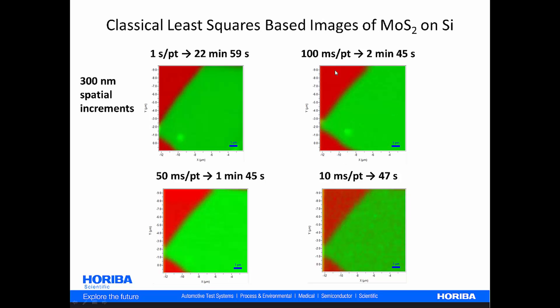Now, here are those same datasets treated to classical least squares algorithm. And you could see that if we now incorporate the entire spectrum in this CLS routine, we really don't lose nearly as much of the quality, the contrast, and the signal to noise in the image as we go from one second per point to 100 milliseconds per point, all the way down to 10 milliseconds per point.